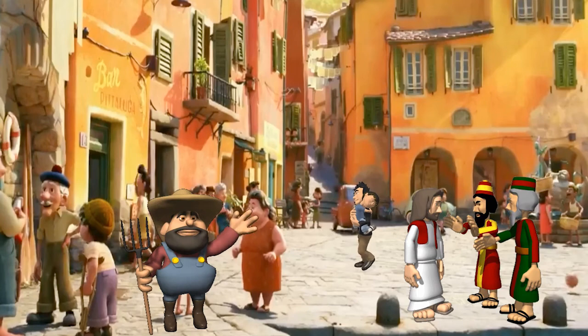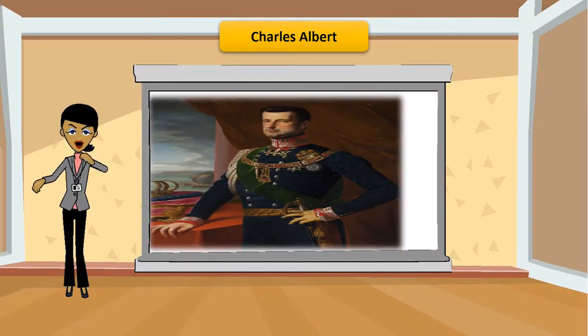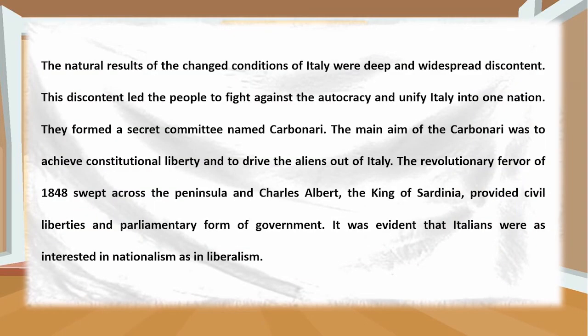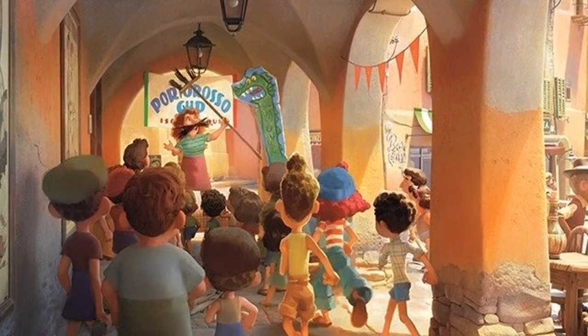The natural results of the changed conditions of Italy were deep and widespread discontent. This discontent led the people to fight against autocracy and unify Italy into one nation. They formed a secret committee named Carbonari. The main aim of the Carbonari was to achieve constitutional liberty and to drive the aliens out of Italy. The revolutionary fervor of 1848 swept across the peninsula, and Charles Albert, the king of Sardinia, provided civil liberties and a parliamentary form of government. It was evident that Italians were as interested in nationalism as in liberalism.